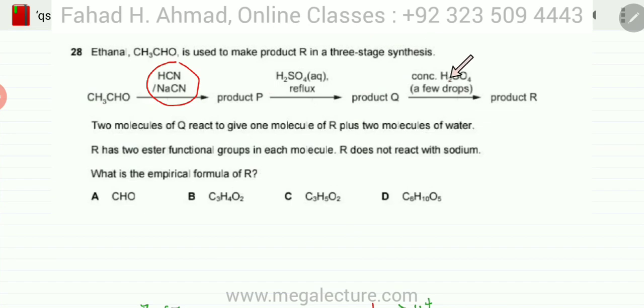The last part says that an ester is being formed and two ester groups are being formed - that is product R. So Q is getting converted into an ester product R which has two ester functional groups.